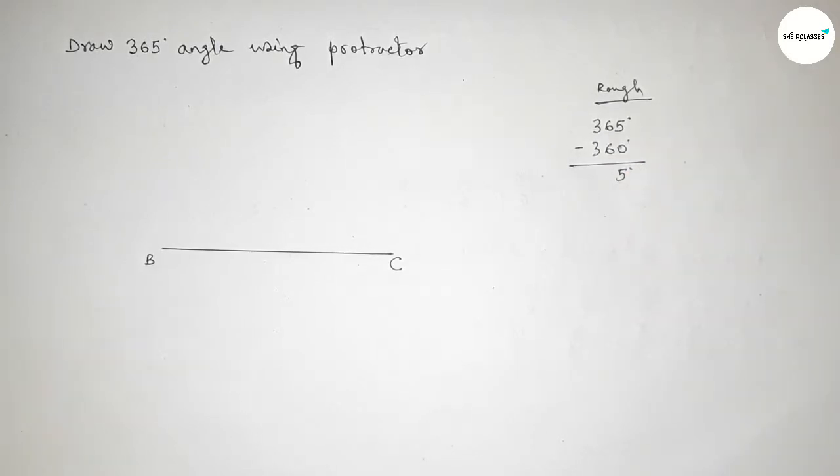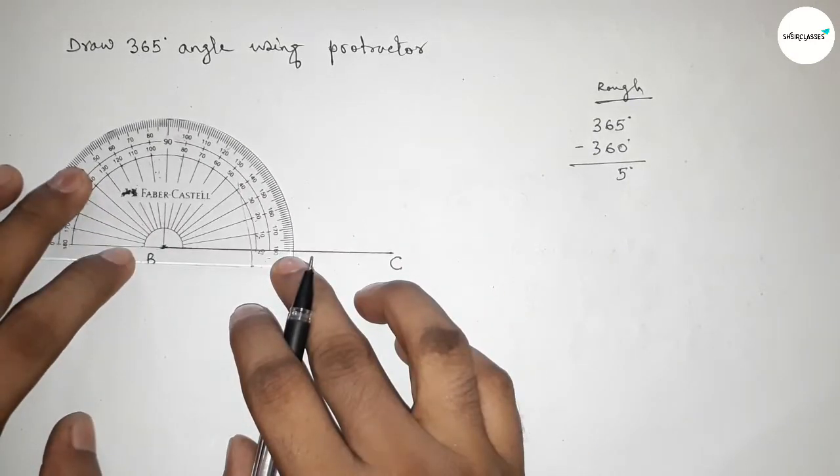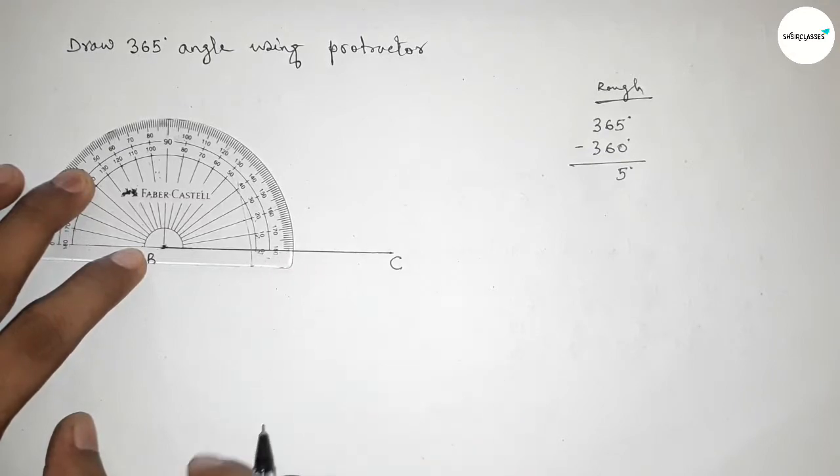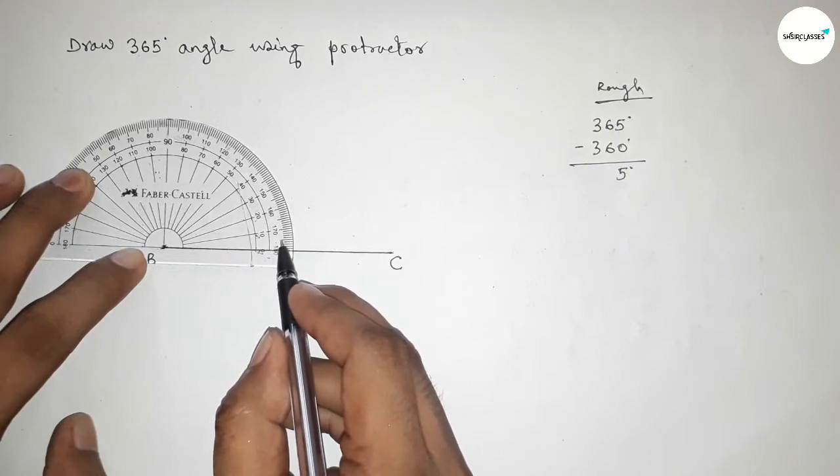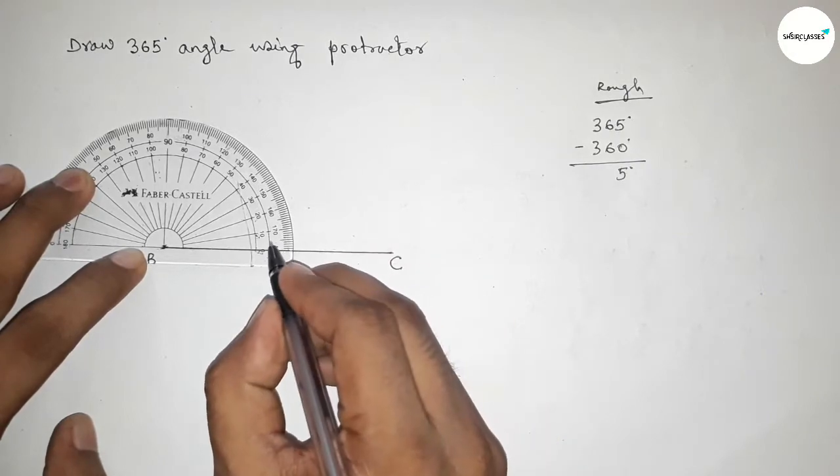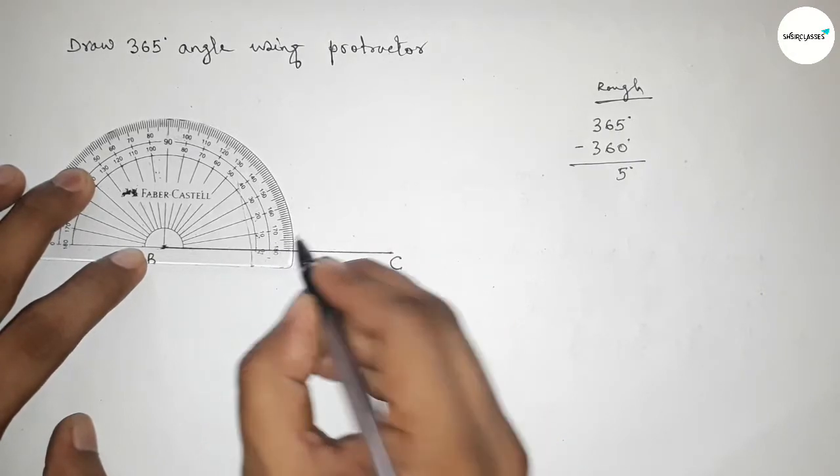First we have to draw 5 degree angle on the point B by using protractor by this way. So first here counting 5 degree angle, so this is 5 degree. So this line 5 degree angle, so this is 5 degree.